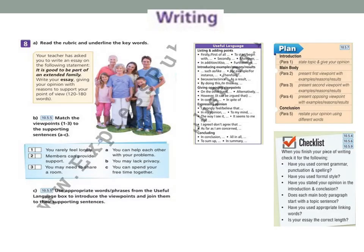Writing exercise number eight: read the rubric and underline the key words. Write your essay giving your opinion with reasons to support your point of view, 120 to 180 words. I think you know the rules of opinion essays. You may use the useful language plan and checklist.